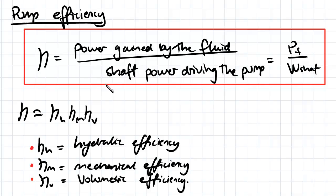How much are we inputting into the pump and how much are we getting out in terms of the energy gained by the fluid? PF stands for the power gained by the fluid, and W shaft is the power that we input to drive the pump.